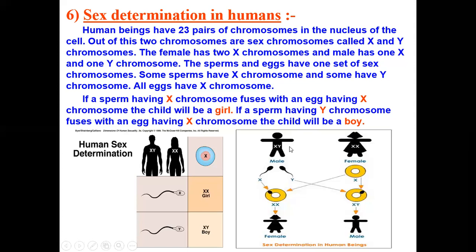As you can see from the diagram, the male has X and Y chromosomes, while the female has XX chromosomes. The sperms and the eggs have one set of sex chromosomes. Some sperms have X chromosomes and some have Y chromosomes, but all eggs have X chromosomes only.